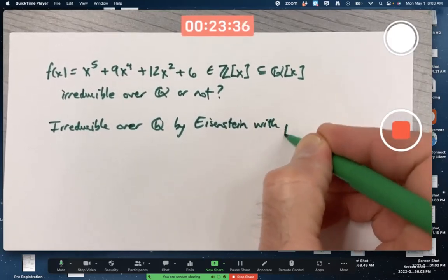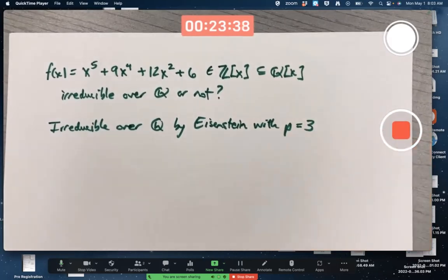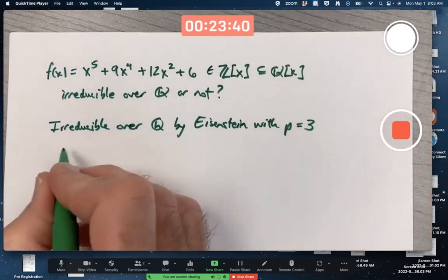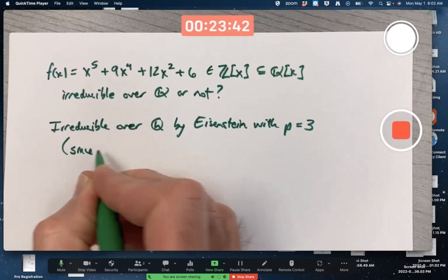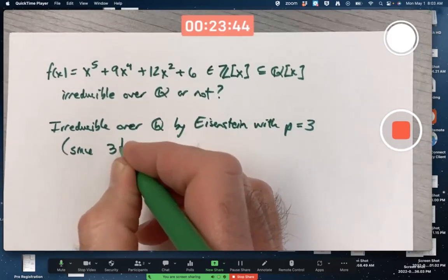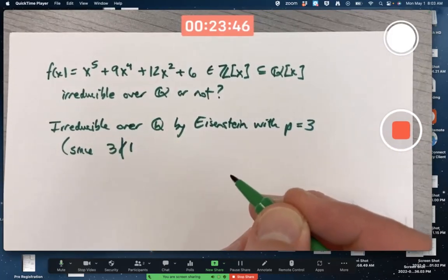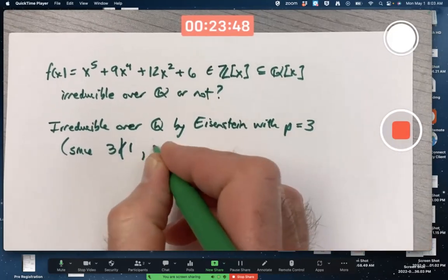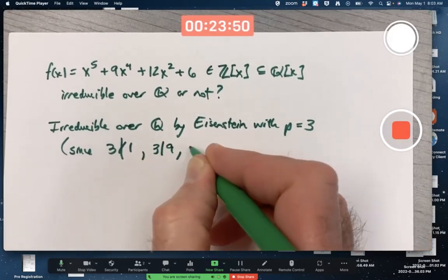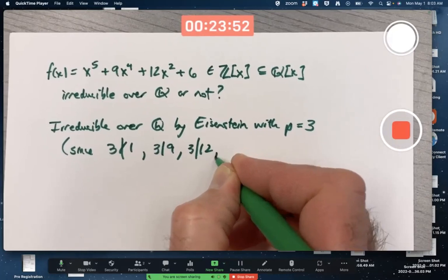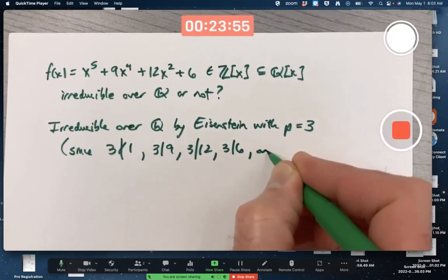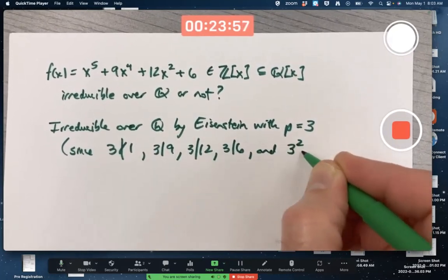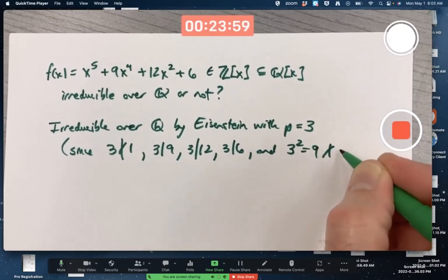With p equal to 3. Since 3 does not divide 1, the coefficient of the highest power, it does divide all the other coefficients—I'm being explicit here—and its square, 9, does not divide the constant term.